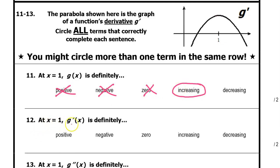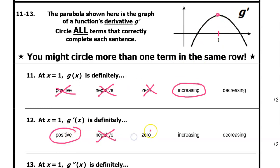Number 12: at x equals 1, g prime is definitely what? They're asking us about g prime, and that's the very graph we are given. At x equals 1, g prime is definitely positive because it is above the x-axis — not negative, not zero. We can also tell it is neither increasing nor decreasing because this is a horizontal tangent line, so we won't circle those either.